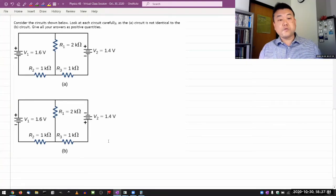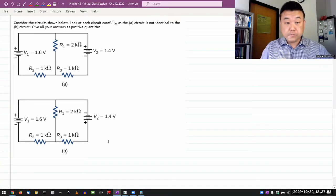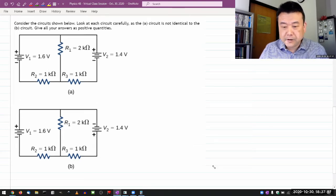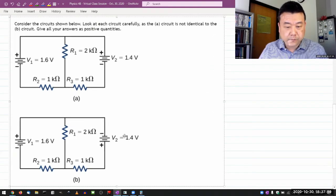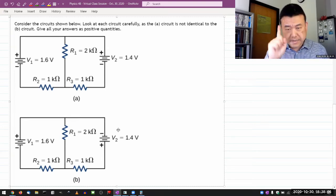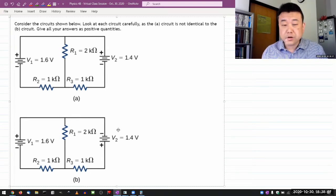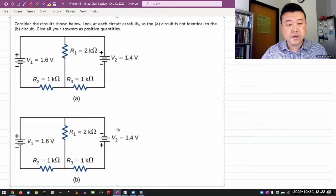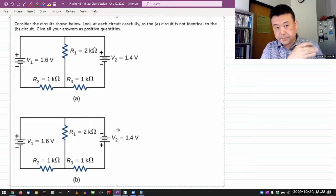Alright, so it says consider the circuit shown below, look at each circuit carefully. We went over how they are not identical because battery V2 has its direction reversed in circuit B. But I'm going to basically do a single analysis, and for circuit B I'm going to make a tiny modification that allows me to get the new answers very quickly.